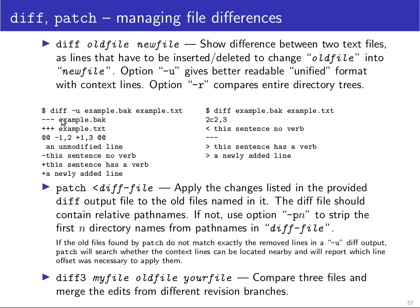A more readable version of the diff output you get with the -u flag. This is also known as a unified diff, and there you can see the old file name and the new file name prefixed with three minus signs and three plus signs. Every line removed from the old version is prefixed with a minus sign, and its replacement or a newly added line is prefixed with a plus sign. You make the modification by removing all lines with a minus and inserting all lines with a plus.